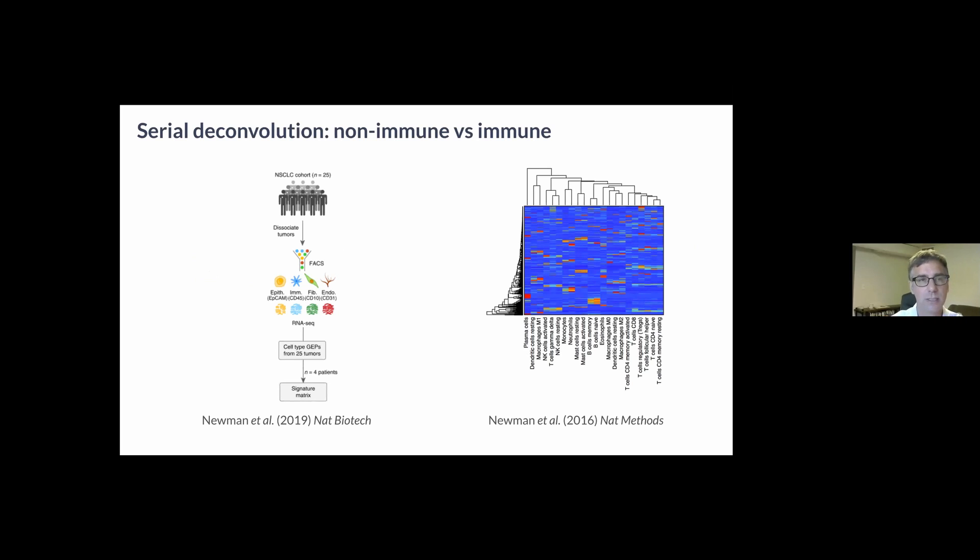As you'll see in a moment, CIBERSORTx outperformed CIBERSORT in our challenge. One difference is that when applying CIBERSORTx we applied a two-stage deconvolution. In the first stage we applied a signature matrix that differentiates between epithelial, endothelial, fibroblasts, and immune cells. This matrix was derived by FACS purifying these populations from four lung cancer patients.